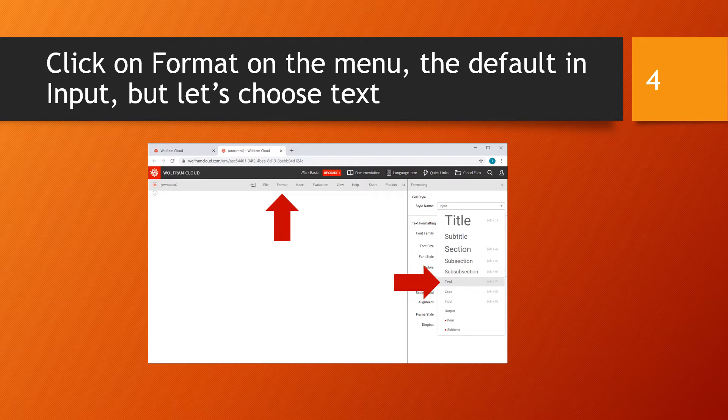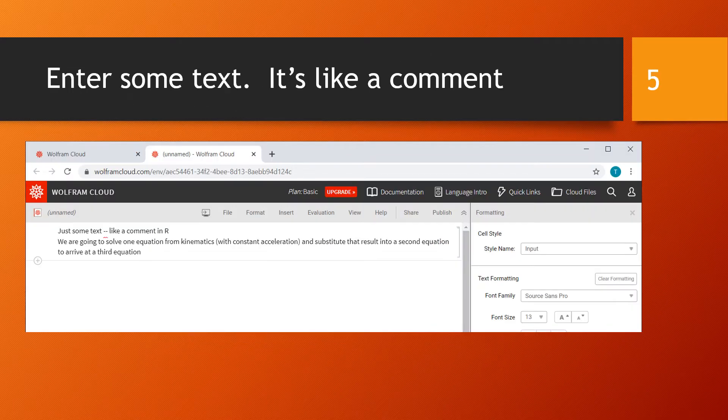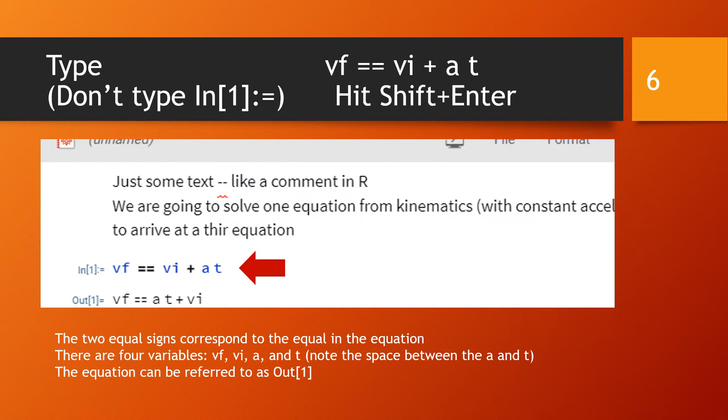We want to start off just by typing a description so we want to go to the menu at the top, hit the format item and then go over to the right and use the drop down and say that we just want to enter some text. So we're making a text formatted cell. In the text formatted cell we just type, it's just text, it's like a comment.